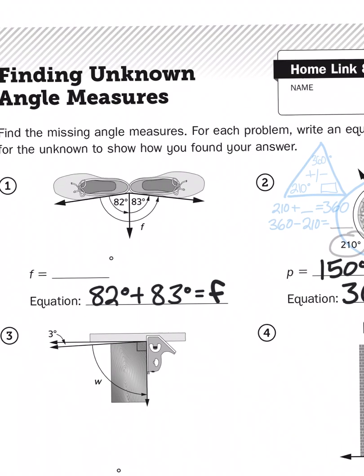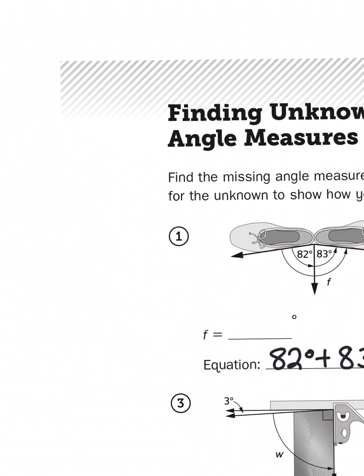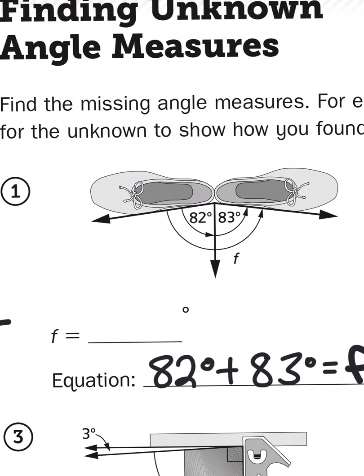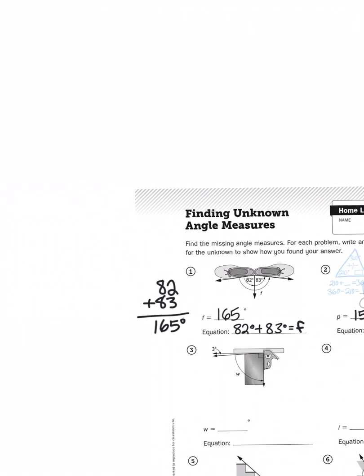So all I have to do here is add these two numbers together, 82 plus 83, and that'll give me my total. You probably already added these in your head. It's 165 degrees. So F in this equation is 165 degrees. So that's all there is to it.